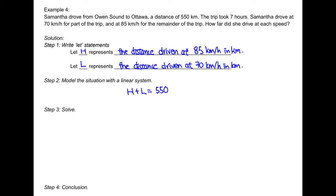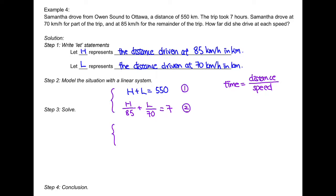The whole trip took 7 hours, and since time equals distance divided by speed, we write H divided by 85 plus L divided by 70 equals 7. The lowest common multiple of 85 and 70 is 1190, so multiplying equation 2 by 1190 gives 14H plus 17L equals 8330.